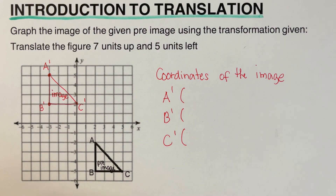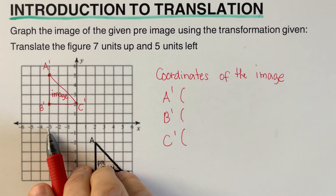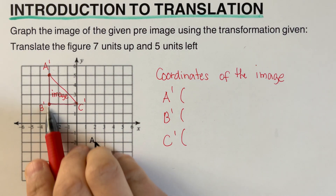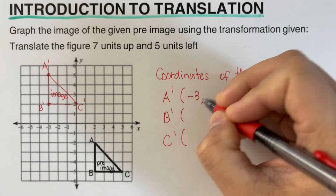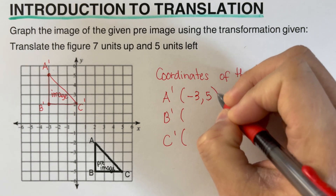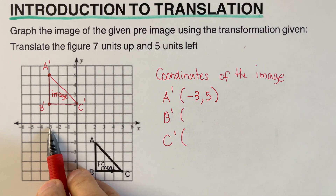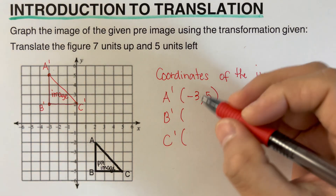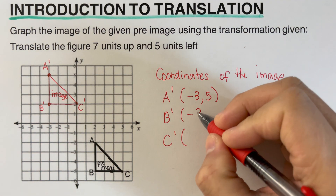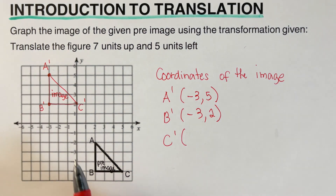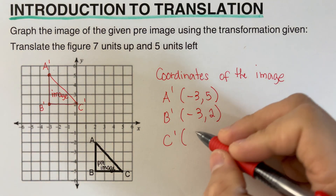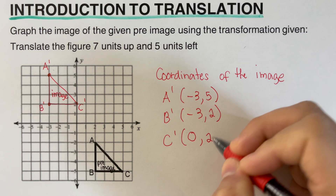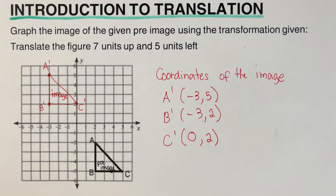So looking at this, our A prime is located on negative three and five. Our B prime is negative three, two. And our C prime is zero, two. So that is what we mean by translation.